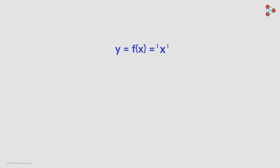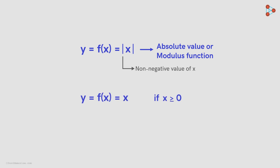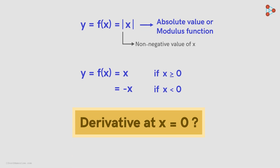But consider this function now — it's called the absolute value or modulus function. These vertical bars say that the value of y is equal to only the non-negative value of x. That is, if x is greater than or equal to zero, then y is equal to x; and if x is less than zero, then y is equal to negative of x. Can you find the derivative of this function at x equal to zero?